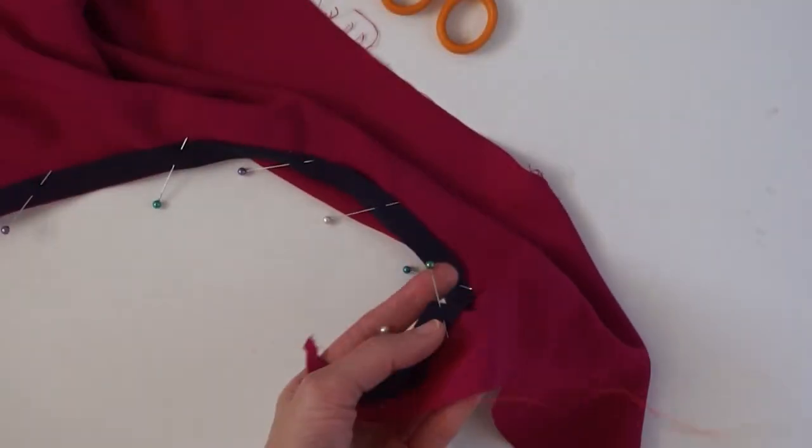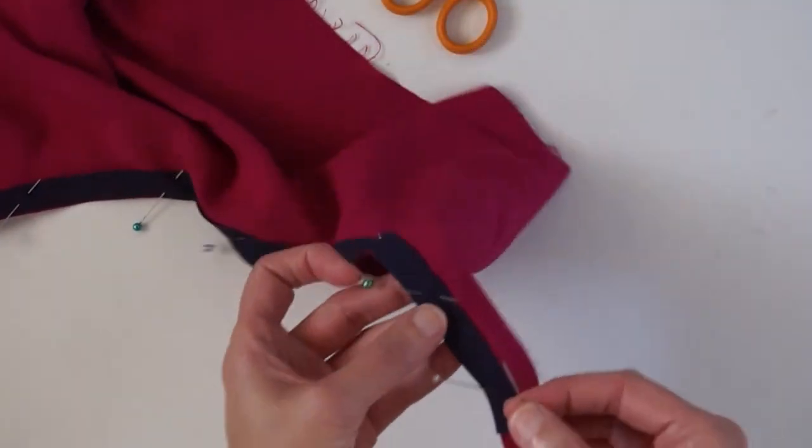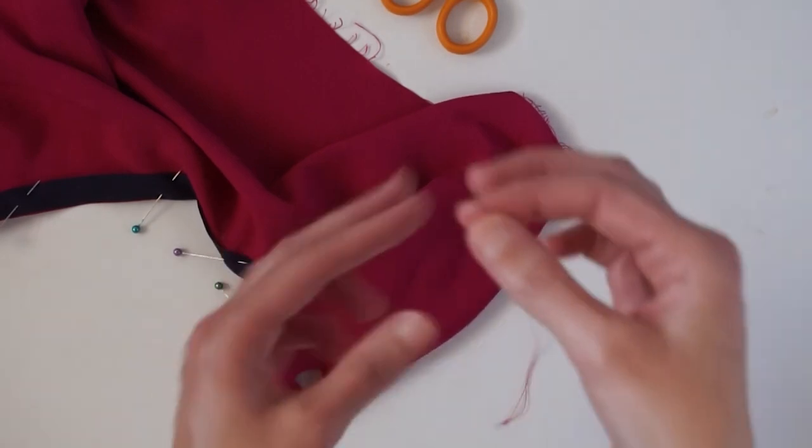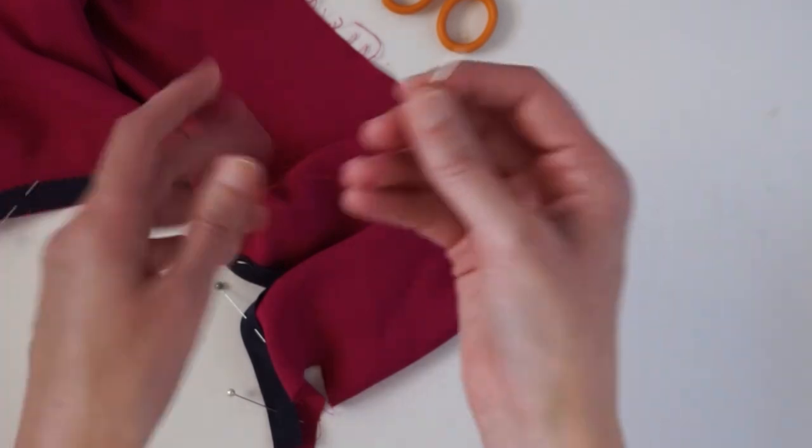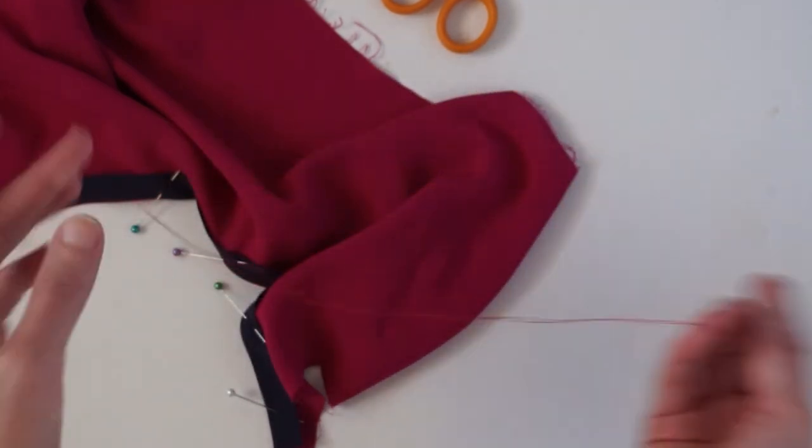So I have this bias facing stitched on and I'm ready to put it in place, sew it in place. I have a double strand of thread and there's a knot at the end.